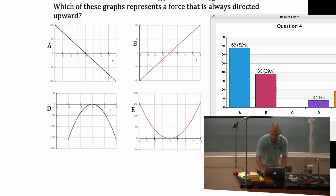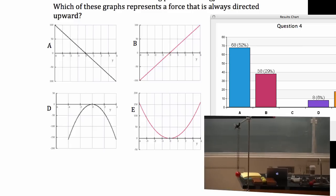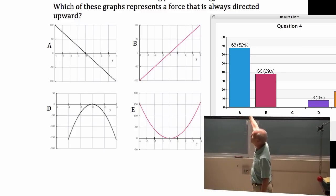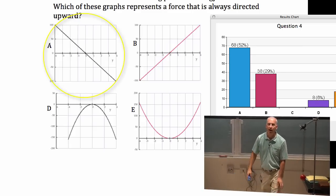So, I'm not, I'm asking a theoretical question. If you look at that, these potential energy graphs, which of them shows a force that's always upward? And what that means is, which of them is the potential energy always going down as you get higher?